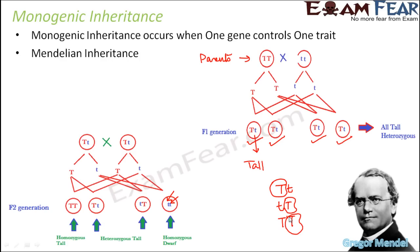When we say that one trait is controlled by one gene, we mean that the trait is controlled by multiple alleles of the same gene. For example, capital T and small t are multiple alleles of the same gene, and all of these are part of the same gene which talks about the height of the plant. Similarly, when you look at Mendel's other experiment where he worked with round and wrinkled seeds, those are also two different alleles of the same gene, which talks about the shape of the seeds.